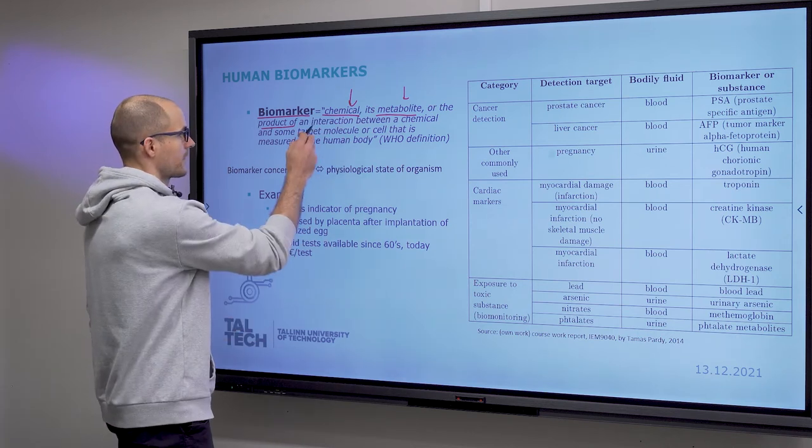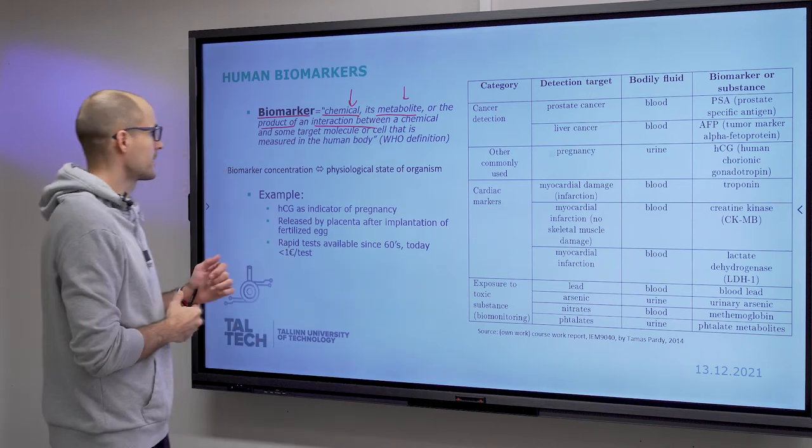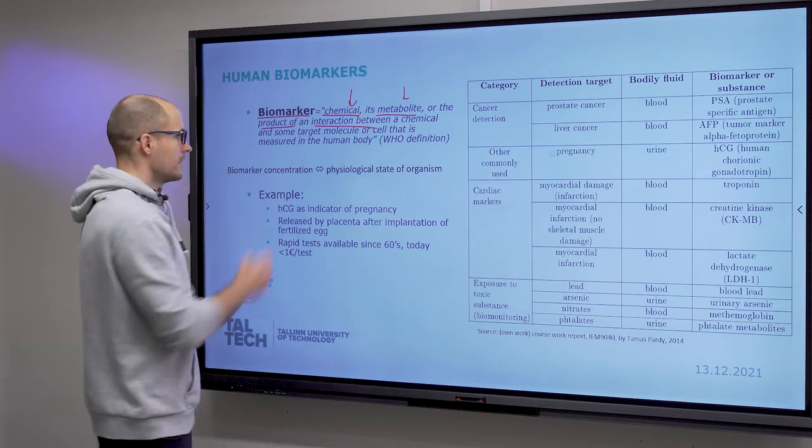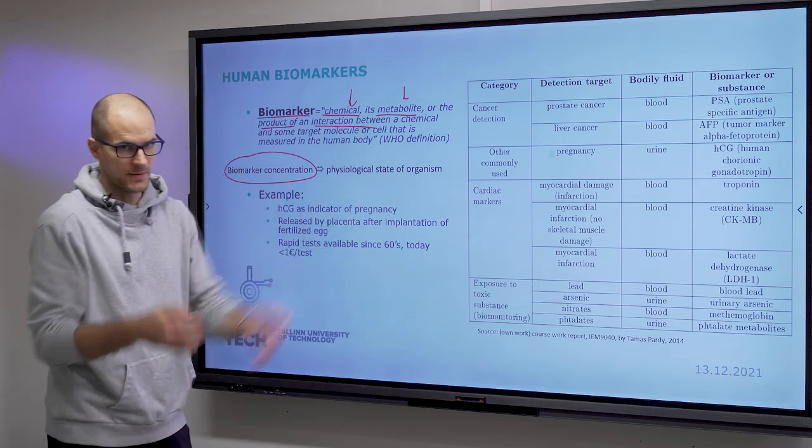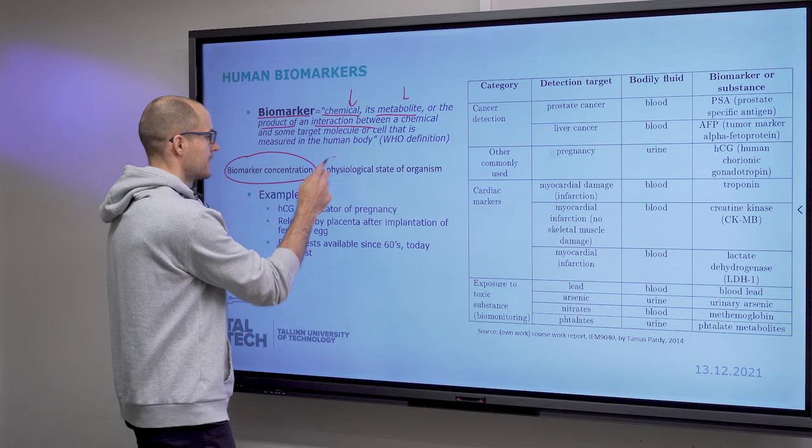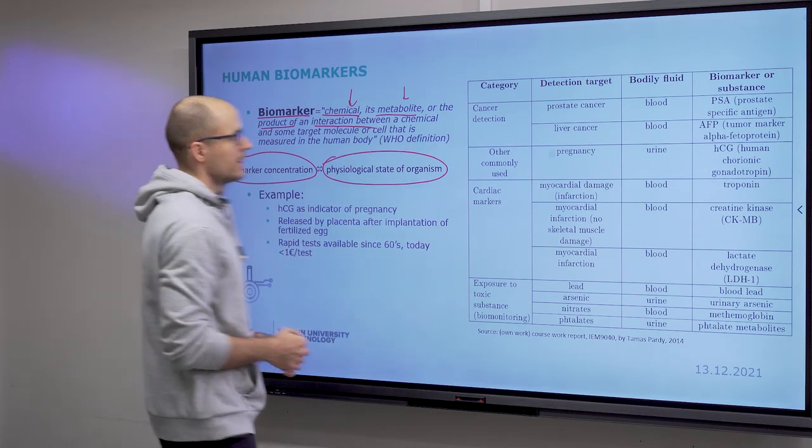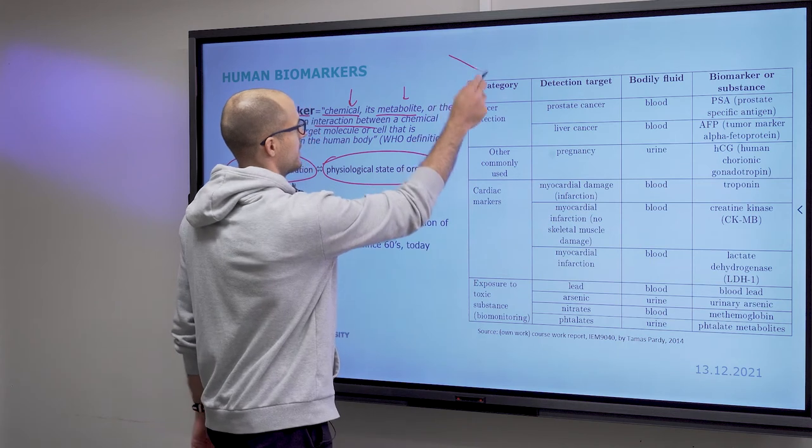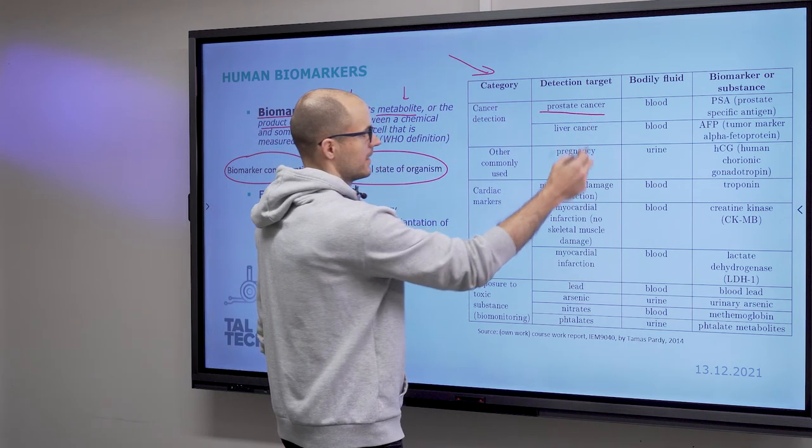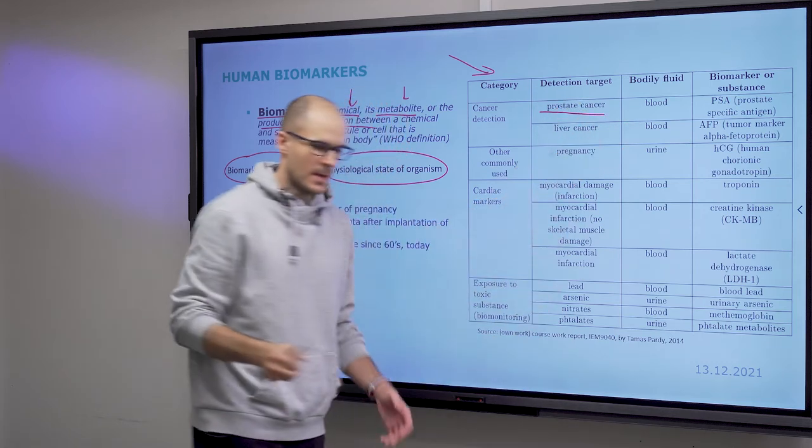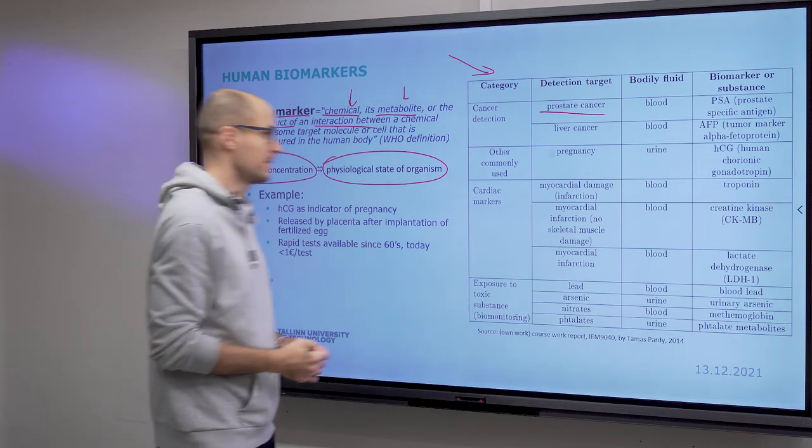And then also products of an interaction between a chemical or a target molecule and cell. And the concentration of biomarkers—the ones that we study anyway—they are characteristic of the physiological state of an organism. So there's an example table here. For instance, prostate cancer can be detected by picking up prostate-specific antigen in high concentration in urine. Liver cancer also has a specific biomarker.